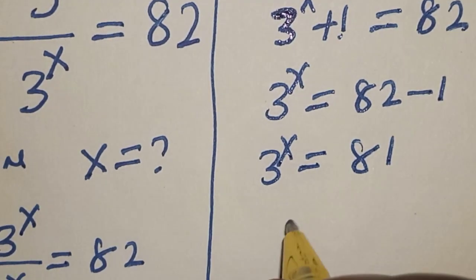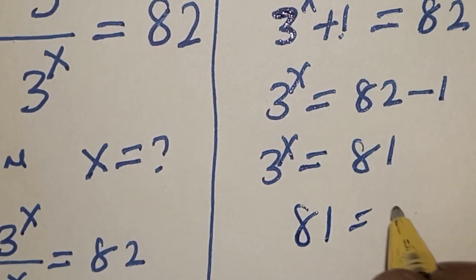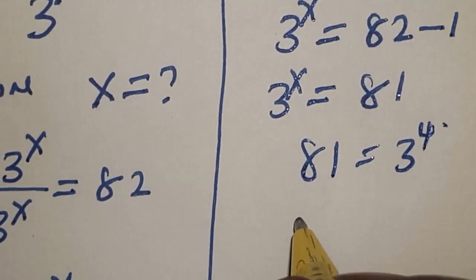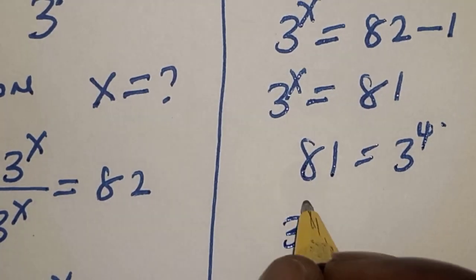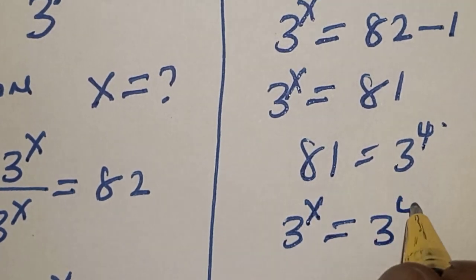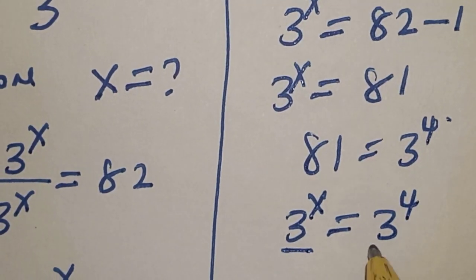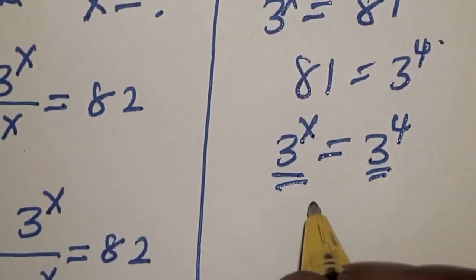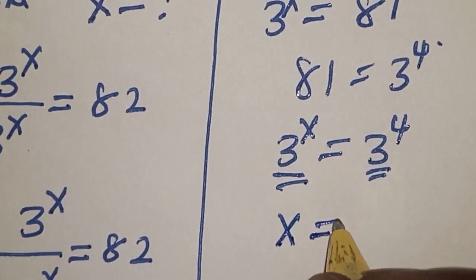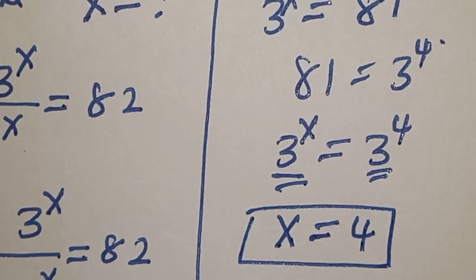And 81 is equal to 3 raised to power 4. So 3 raised to power s is equal to 3 raised to power 4. They have the same base, therefore s is equal to 4. That is the value of s.